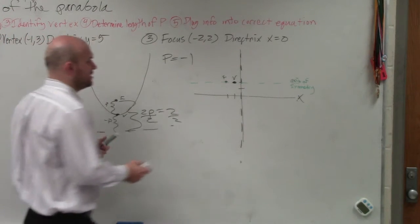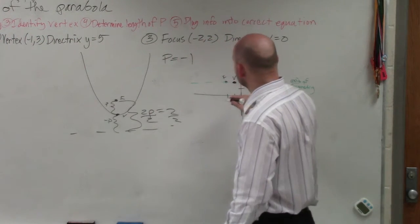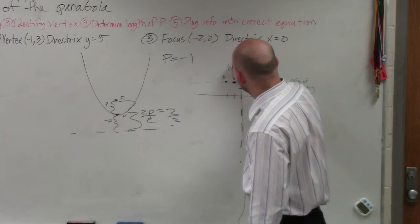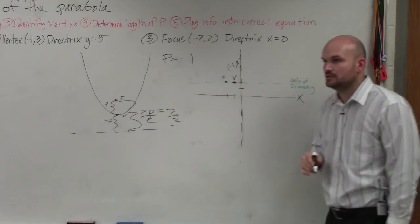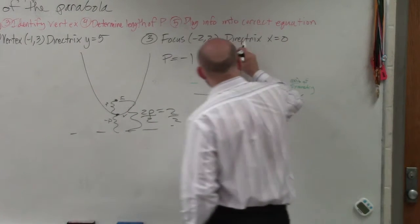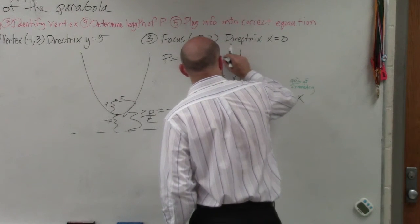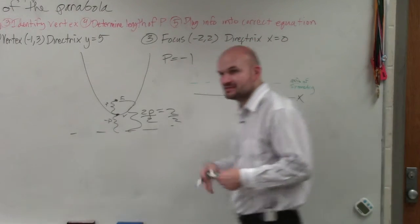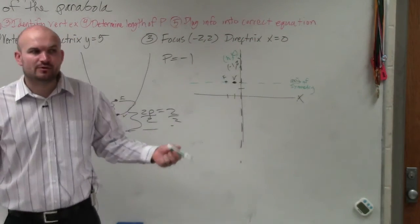And then we know the focus. Well, if here the focus is negative 2, 2, can we figure out what this coordinate point is? Negative 1, 2. And remember, that's h, and that's k. So now, we know what h and k is, and we know what p is. That's all the information we need to write the equation out of a parabola.